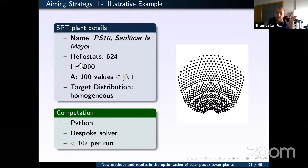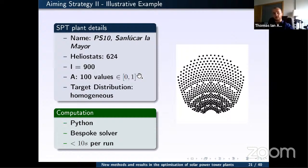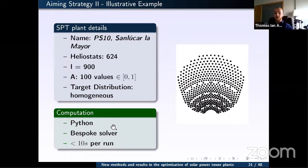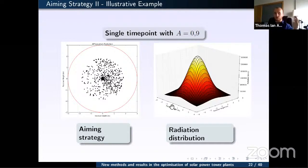We start from a randomized aiming point strategy and take steps in the direction of the maximum gradient. If a step causes an aiming point to land outside the receiver, a projection algorithm brings it back. The step size is determined using a modified Armijo rule with constant ε and an iterative line search. For demonstration we use the PS10 plant, 900 test points on the receiver surface, and 100 values of a between 0 and 1.